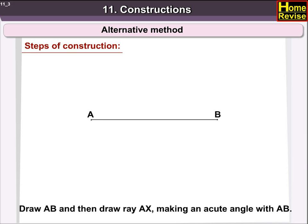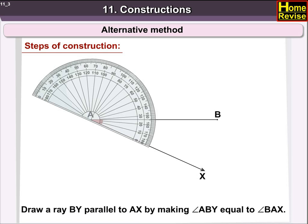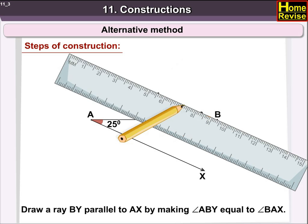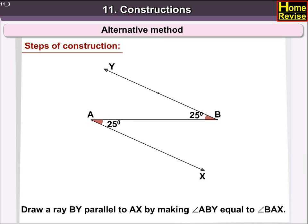Let us see the alternative method. Steps of construction: First, draw AB, any ray AX making an acute angle. Draw ray BY parallel to AX by making angle ABY equal to angle BAX.